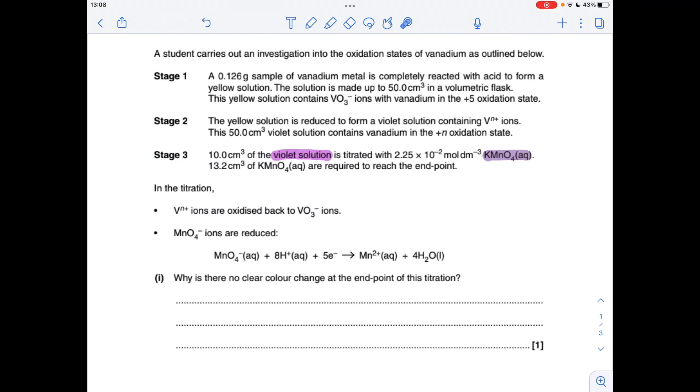Okay, so we'll make a start. For the first part, why is there no clear color change at the end point of the titration? Well, look at the colors - we're titrating a violet solution against a purple solution, so it's going to be really difficult to tell the end point because the colors of the chemicals are so similar.